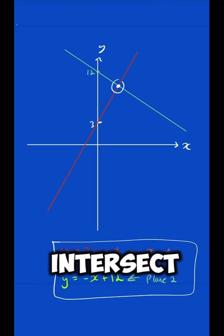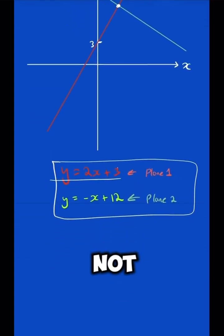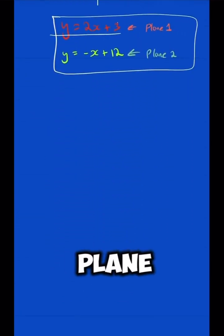Now, we need to find where they intersect so we can best manage if they're going to collide or not. So, plane 1 and plane 2, we have y equals 2x plus 3, and we have y equals minus x plus 12.